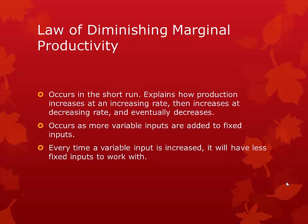The law of diminishing marginal productivity states that increasing production will lead to increasing output at an increasing rate. However, if you keep increasing inputs, eventually the output will increase at a decreasing rate, it will bottom out, and eventually the output will decrease. This occurs as more variable inputs are constantly being added to a set of fixed inputs.